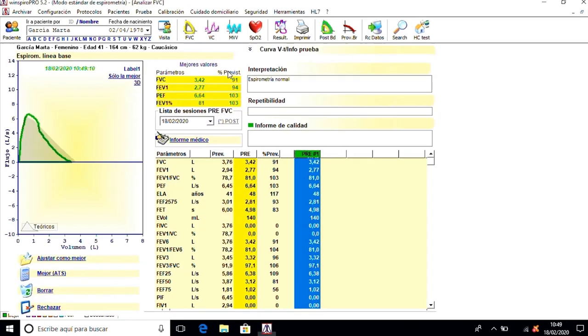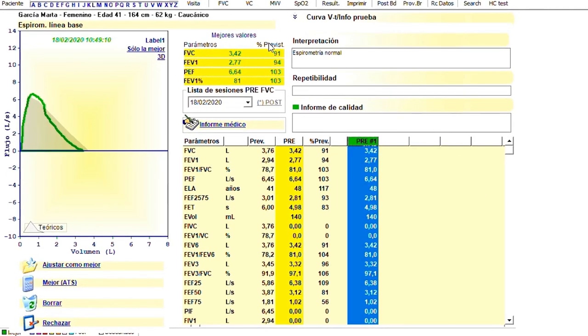Let's see the results. The ideal forced capacity for this person is 3.76 liters. She has managed to mobilize 3.42 liters in the real test, which is 91 percent of the ideal value.